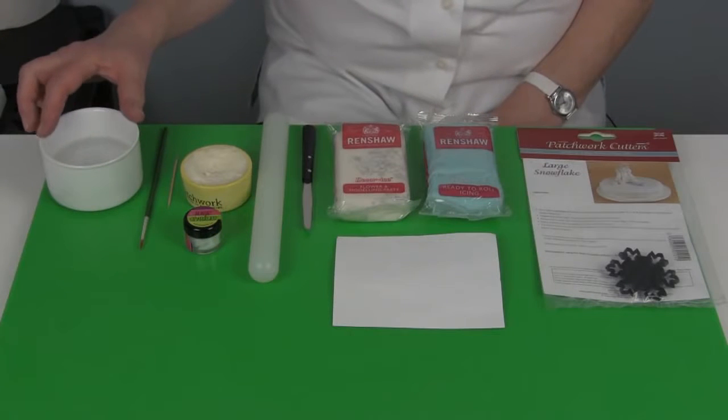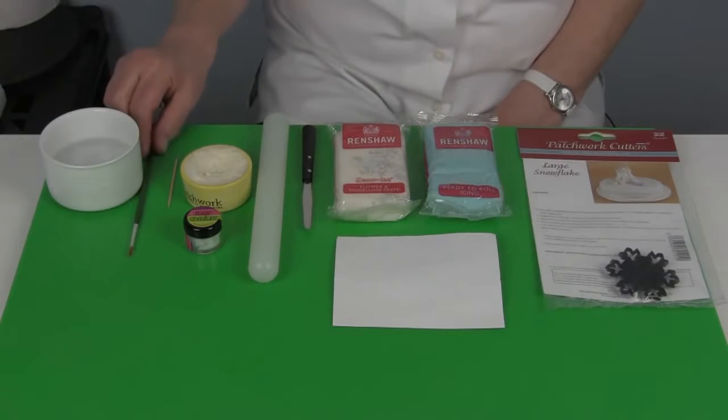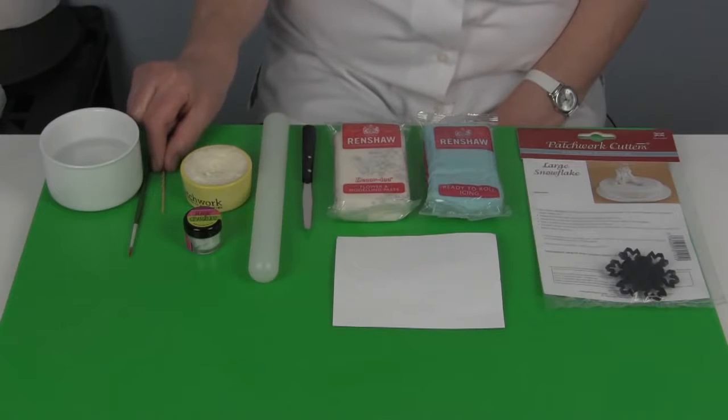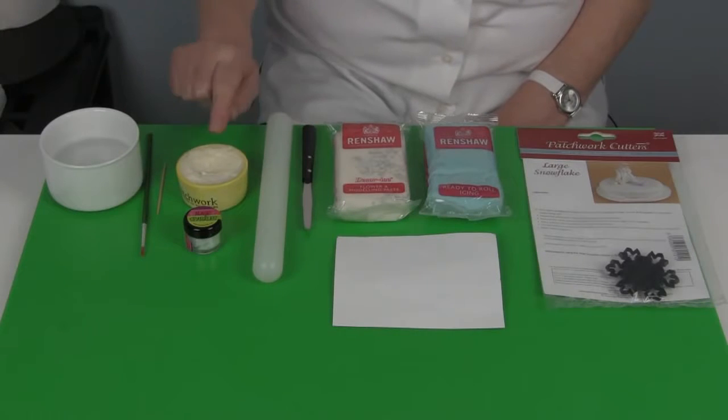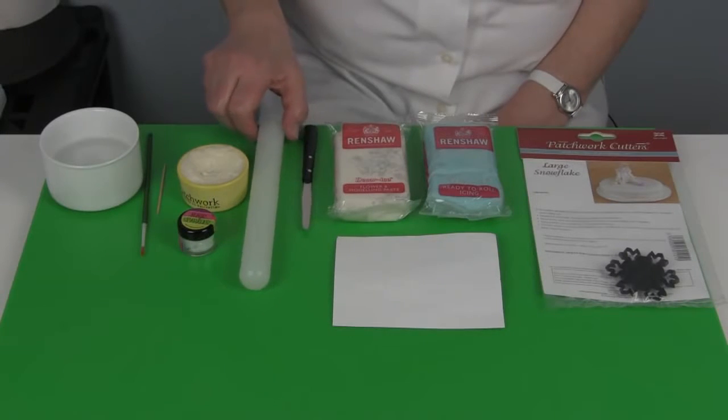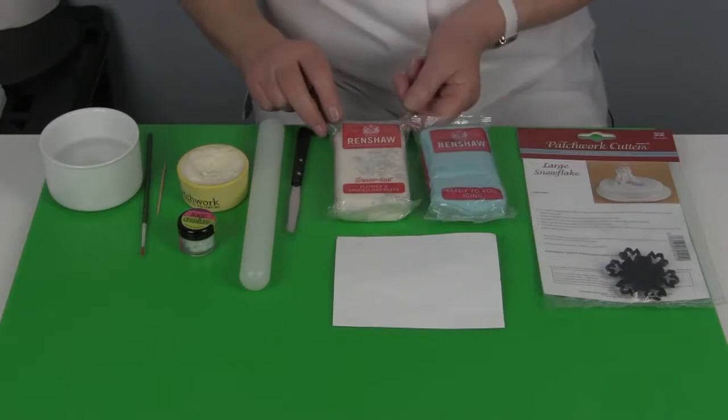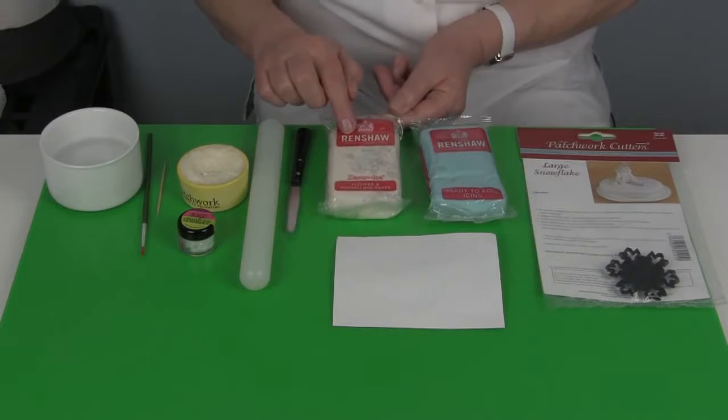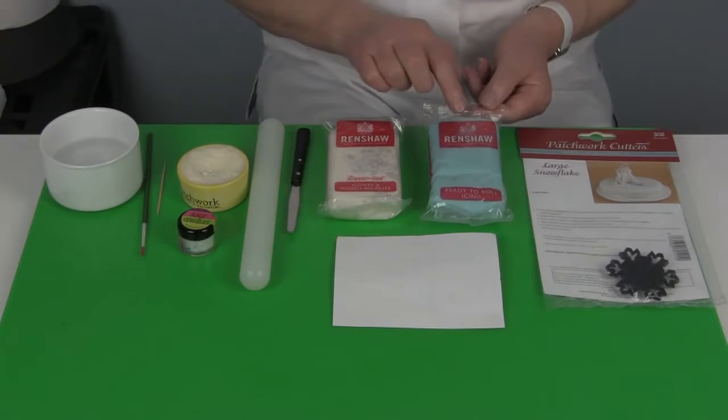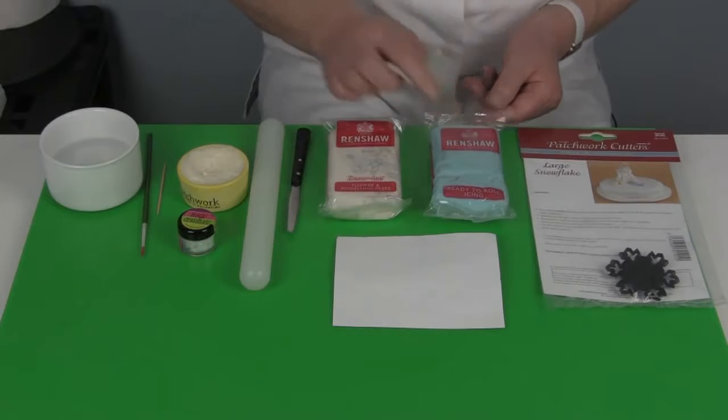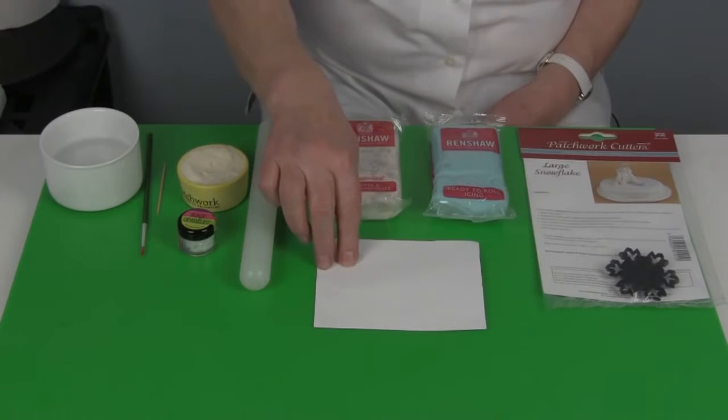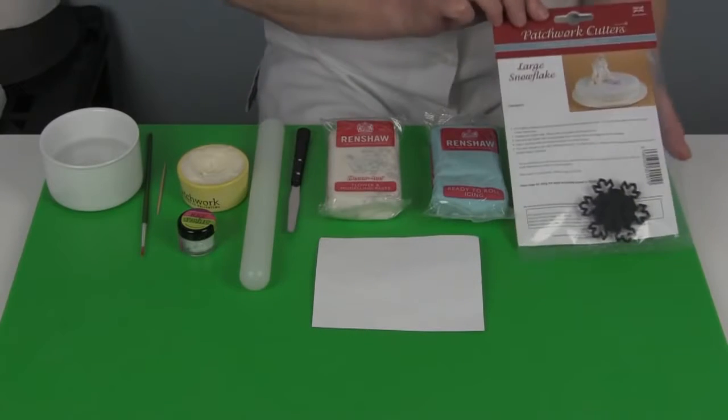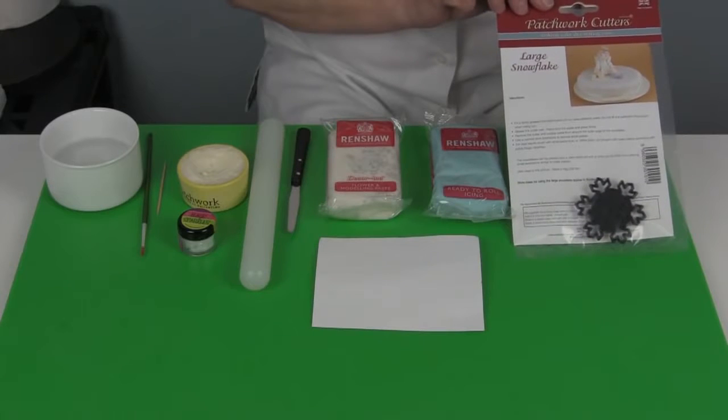You will need a small bowl of water and a water brush, a cocktail stick, a small pot of white shortening, magic sparkles (that's edible glitter), a non-stick rolling pin and a small knife. I'm using white flour paste to cut out the snowflakes and covering the cakes in baby blue ready-to-roll icing. You'll also need a piece of plain paper and of course the cutter, the large snowflake cutter.